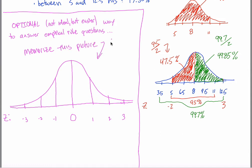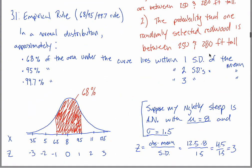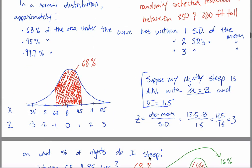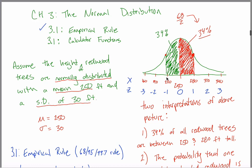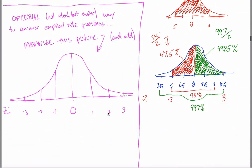Memorize this picture and add. The empirical rule tells you that 68% of the area lies within one standard deviation of the mean — this shaded region is 68%. If 68% of redwood trees are between 220 and 280 feet tall, we can deduce that half of them, 34%, are between 250 and 280. The area between zero and one standard deviation above the mean is always 34%, and through symmetry, the area from negative one standard deviation to zero is also 34%. Between negative two and positive two is 95%, and if you take away the 68% already accounted for, you're left with 27% total, so that means 13.5% on each side.